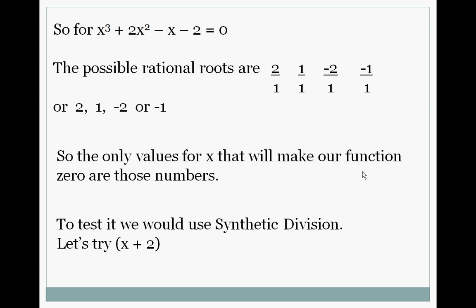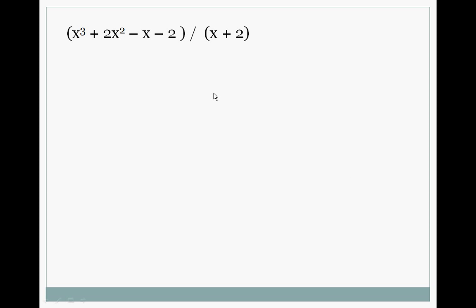To test it we can use synthetic division. Let's try x+2 to see if it goes in evenly. So we set it up. We take the negation here. What makes it 0? Bring down our coefficients 1, 2, -1 and -2. And then we're multiplying and adding, multiplying and adding, and multiplying and then we add and we get a zero remainder.